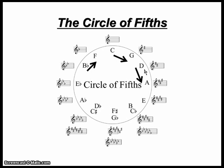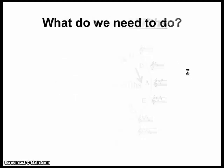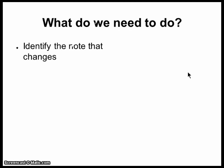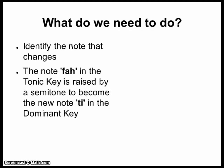It's a good idea to learn the position of each key on the circle of fifths. First of all, we need to identify the note that changes. In the tonic key, the note Fa is raised by a semitone to become the new Ti in the dominant key.